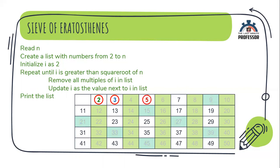Now, 5 less than or equal to 7, this condition is also true. So, remove all the multiples of 5 in the list and update i as the value available next, that is, the next prime number is 7. Now, 7 less than or equal to 7, that is true. So, remove all the multiples of 7 in the list and update i as value next to i in the list, that is, i value becomes 11.